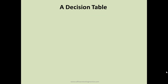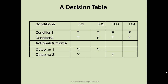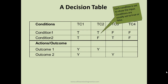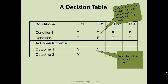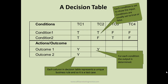Here is what a decision table looks like. You have Condition 1 and Condition 2, and based on the inputs for those conditions, you have Outcome 1 or Outcome 2. Each condition is usually set to true or false, and for each combination of conditions, the corresponding output or action is determined.